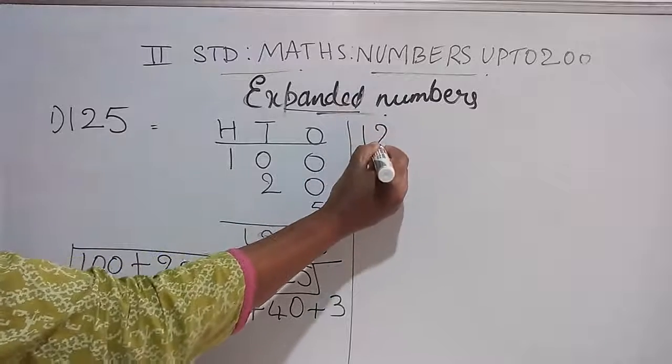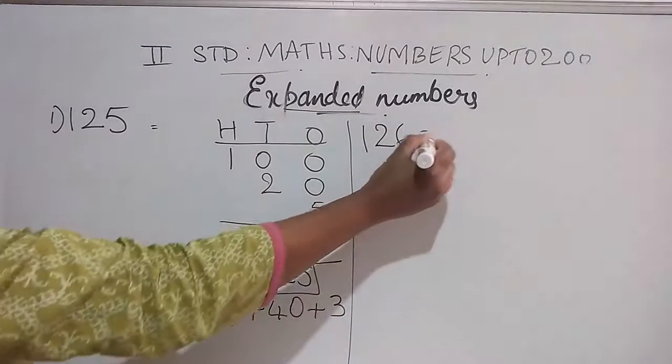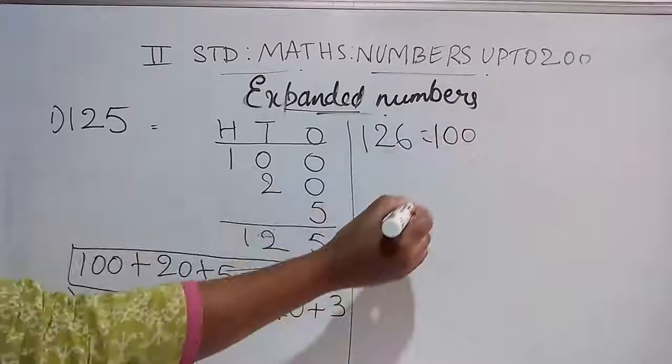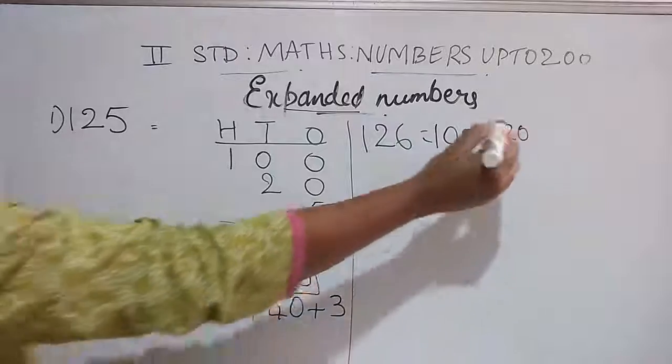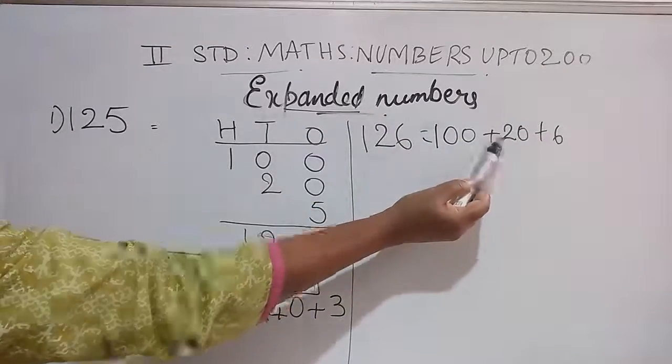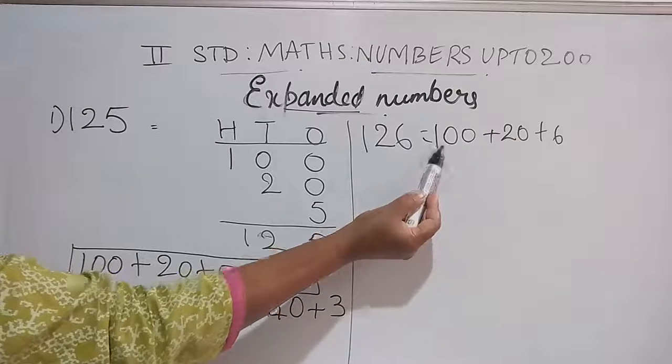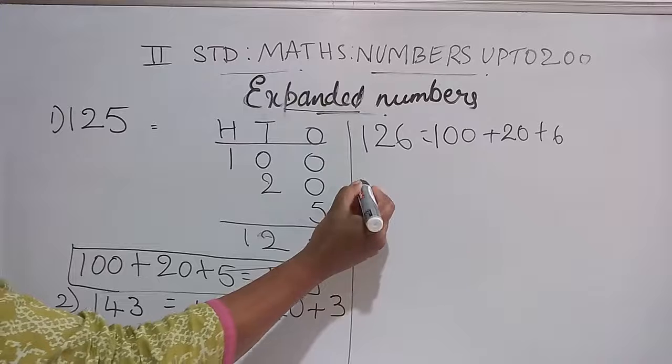126. 100, next number will be 20, and the next number will be 6. So 6 is in 1s place, 2, we have 20 and 100, we have 1 hundred. So I will write one more.